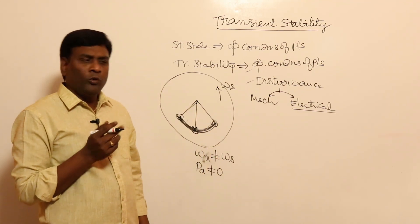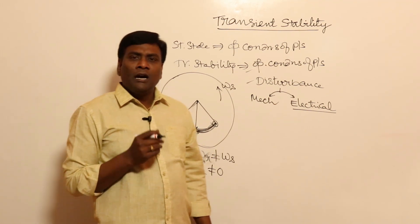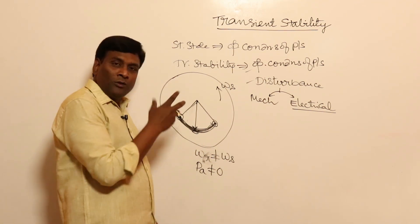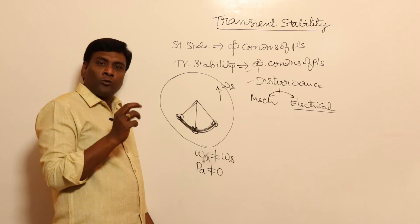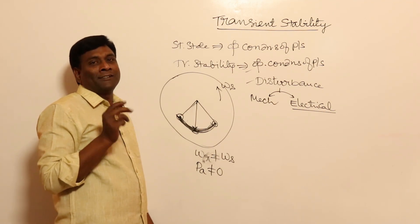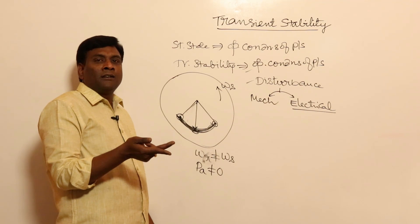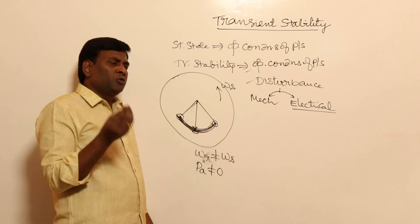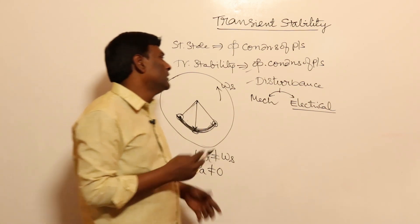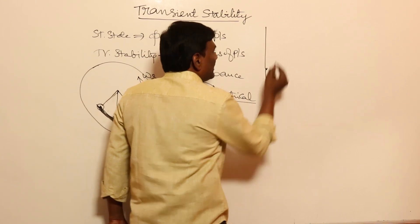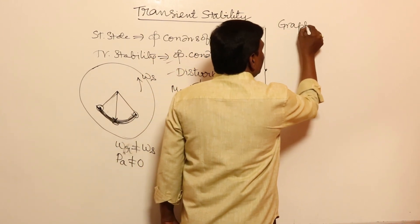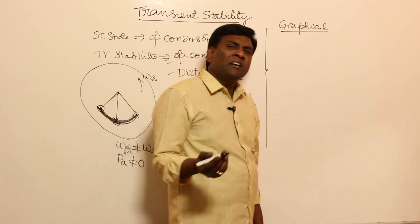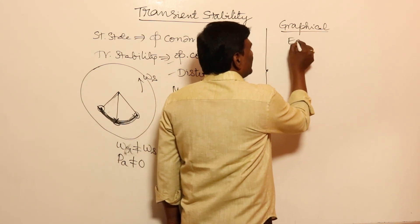So there are two ways to solve the swing equation. One is graphical analysis, and another is numerical. Why graphical or numerical? Because the variation of the rotor involves sine delta, which is non-linear. When it is non-linear, graphical representation can be done because closed-form equations cannot be written. Numerical methods will solve anything.